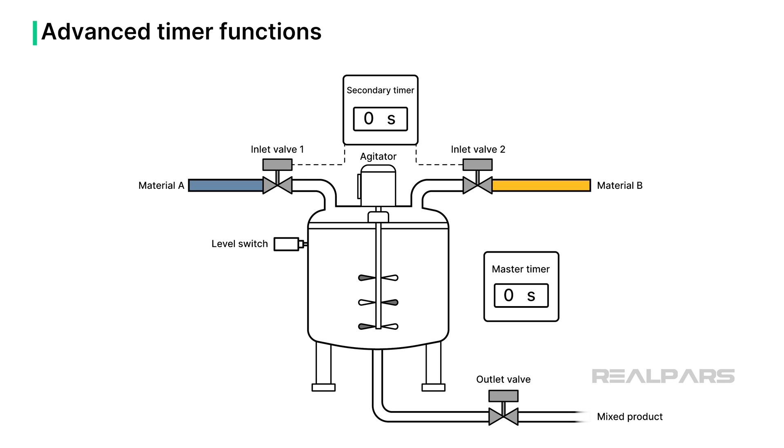Timers can be used for executing complex logic sequences. Timing functions can be cascaded to control the alternating addition of two feed streams into a mixing vessel, for a specific period of time. The master timer is set up for the overall addition time. A secondary timer controls the alternating opening and closing of the two ingredient valves.